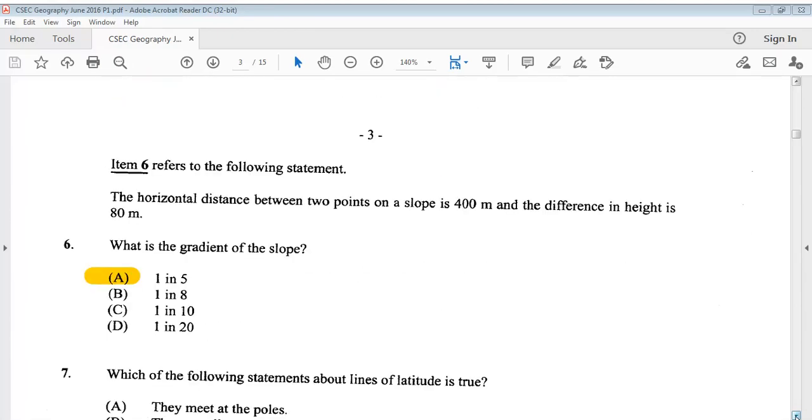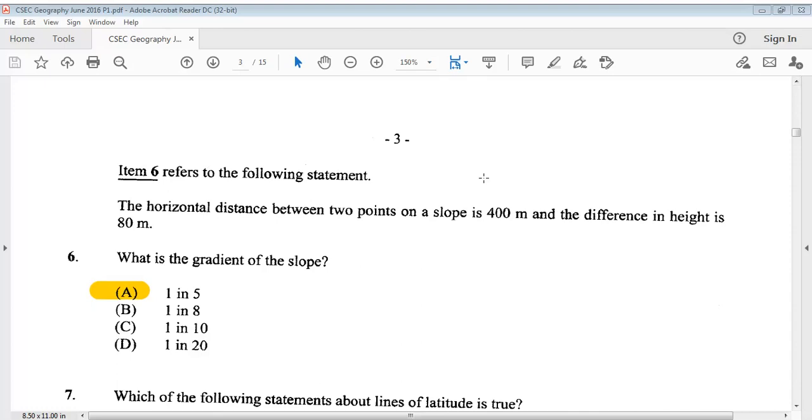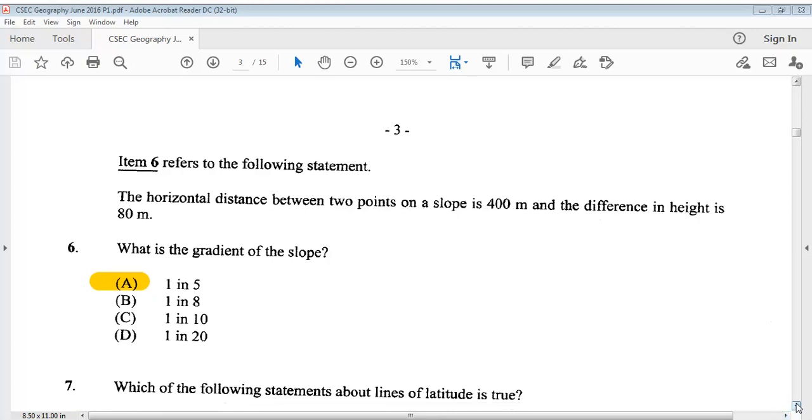Item 6 refers to the following statement: The horizontal distance between two points on a slope is 400 meters, and the difference in height is 80 meters. What is the gradient of the slope? The answer is A, 1 in 5.